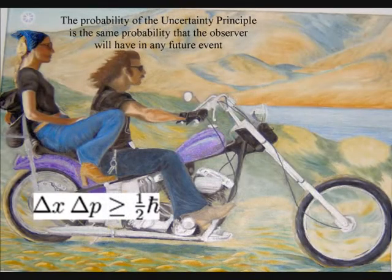The second postulate is that Heisenberg's uncertainty principle, that is formed by the wave function, is the same uncertainty that we have with any future event.